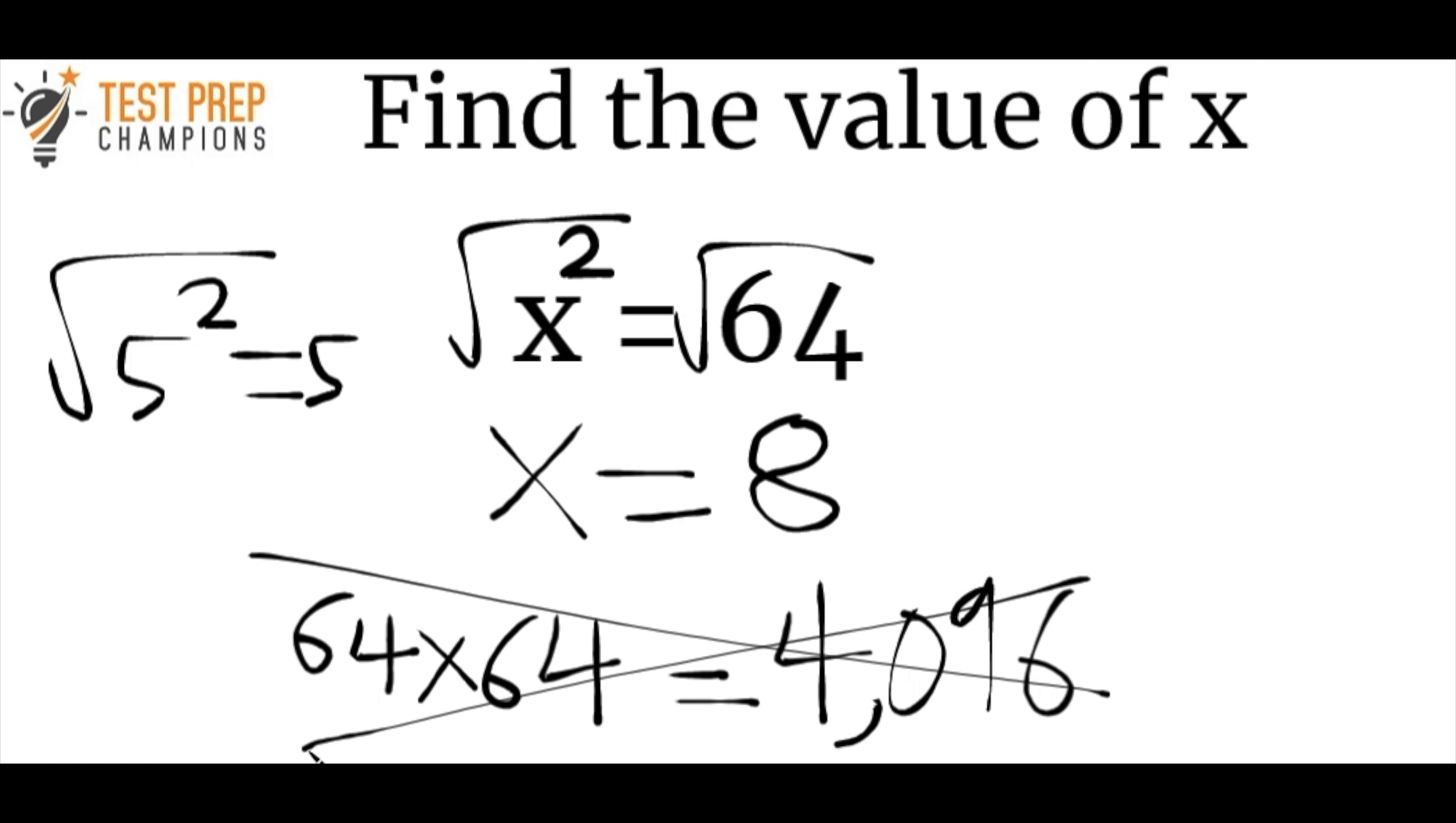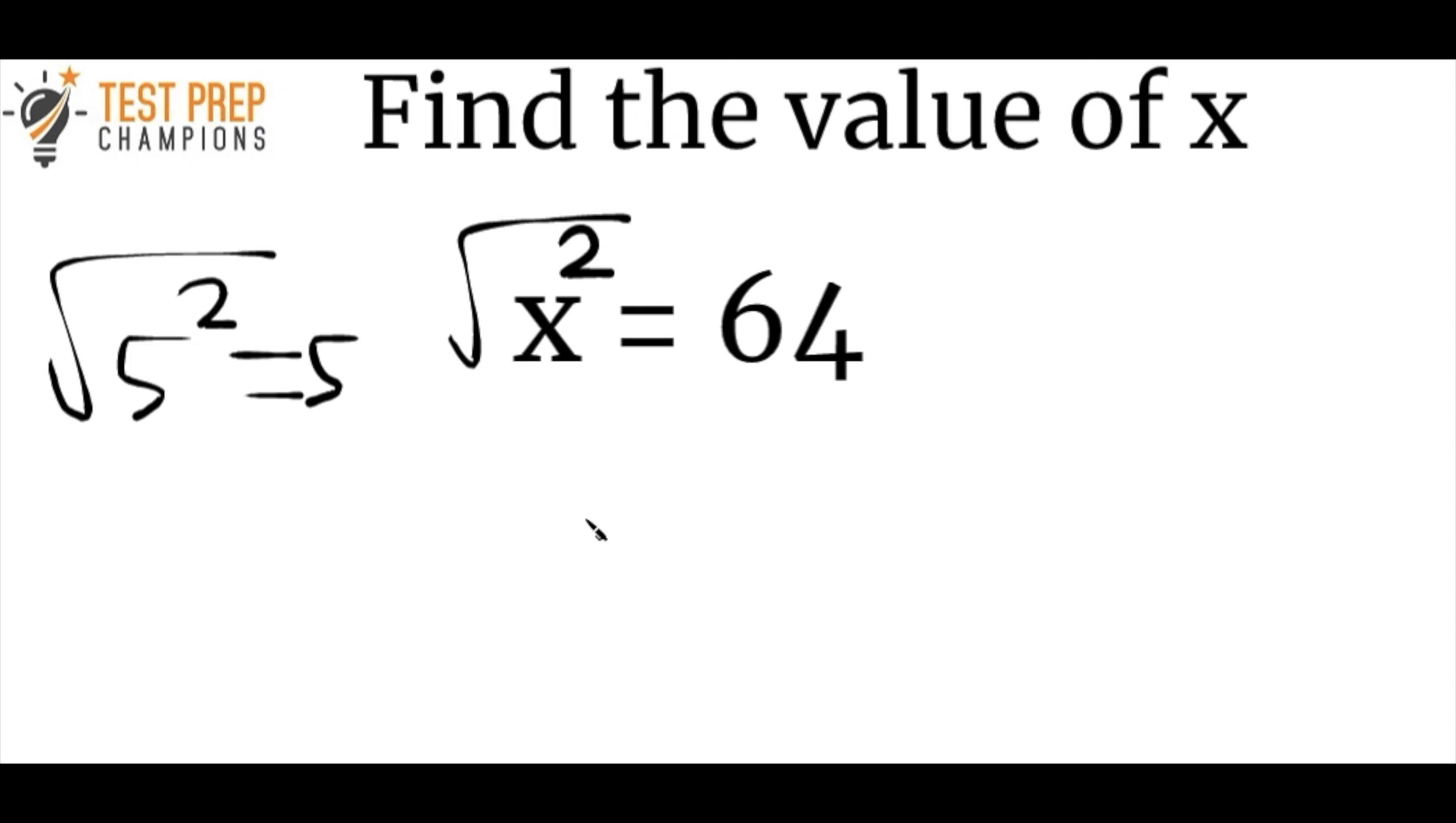Because to get that value of x, you have to remember that starting out here, at the very beginning of this equation, what we had at the very beginning, the equation was just x squared equals 64. And we need to get that x. So we've got to get rid of that square. And we do that by taking the square root.